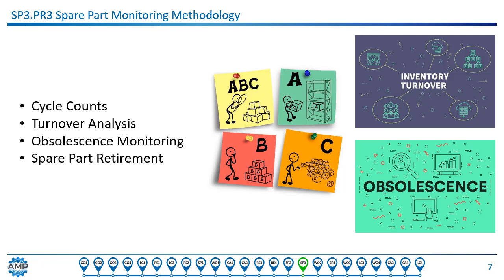Turnover Analysis: inventory turnover is a measure of the number of times inventory is sold or used in a time period such as a year. It's calculated to see if a business has excessive inventory in comparison to sales or issue. Obsolescence Monitoring: obsolescence is the transition from availability of products by the original manufacturer or supplier to unavailability. Spare Part Retirement: ensuring that periodic orders are stopped, the part is removed from the CMMS, and inventory removed from the store room when a part is retired.